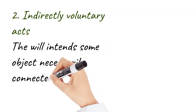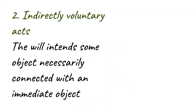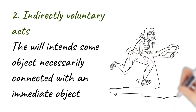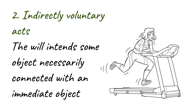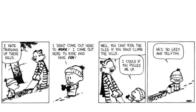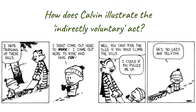The second type is the indirectly voluntary act. The will intends some object necessarily connected with an immediate object. For example, you may want to exercise every day, but the real goal is to lose weight. For class discussion: how does Calvin illustrate the indirectly voluntary act?